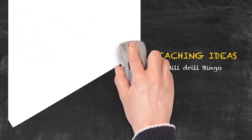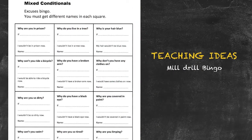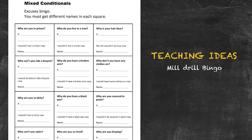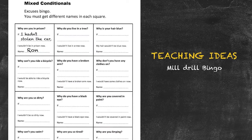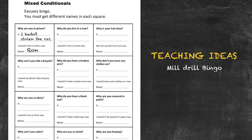Students each have a sheet. They mill drill around, speaking to various people in the class, and try to get different names in each square. In the middle of each square there is a situation such as 'why are you in prison?' One person has spoken to Ron, who said: 'if I hadn't stolen the car, I wouldn't be in prison now.' They're making up possible starts in the mixed conditional pattern. If they can get a line of different names, that's a bingo. You can also play for a full house to keep the activity going.